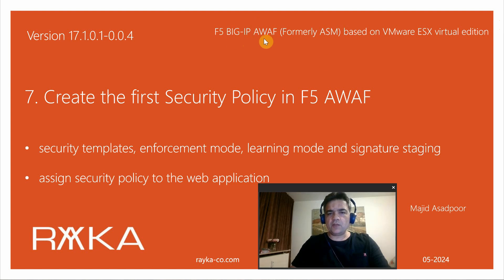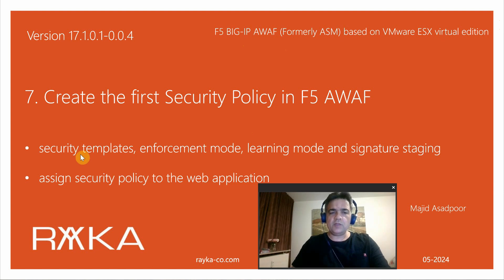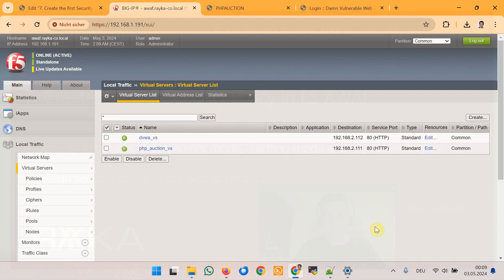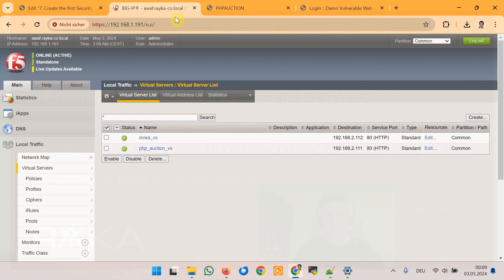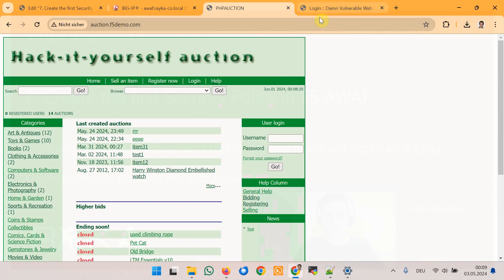Welcome to another video of the course F5 BIG-IP Advanced WAF or ASM. In this section we are going to create the first security policy which will be used to protect traffic to a web application. We will learn the concepts and terminologies required to create a security policy, including security templates, enforcement mode, learning mode, and signature staging. We have already configured two vulnerable web applications, Hack It Yourself and DVWA, accessible via F5 LTM virtual servers through the names auctionf5demo.com and